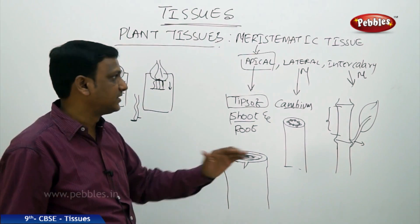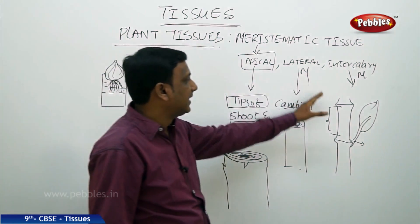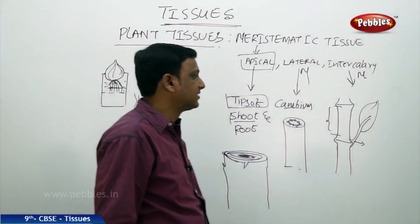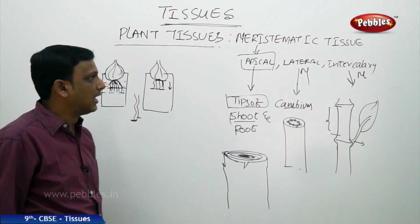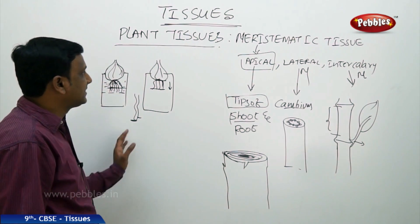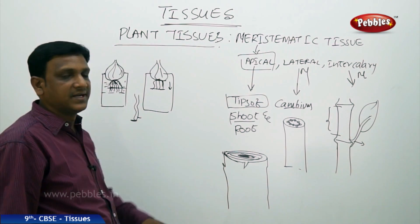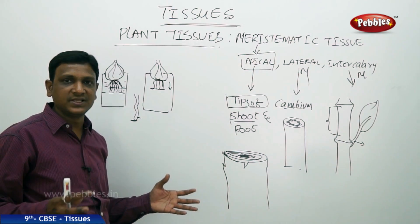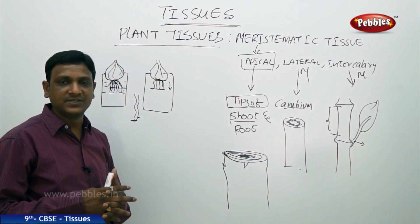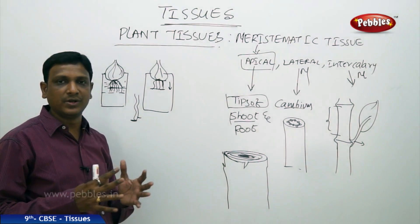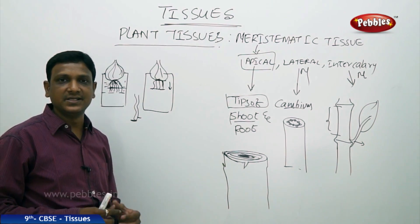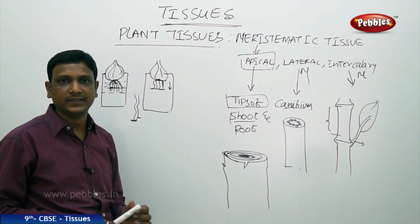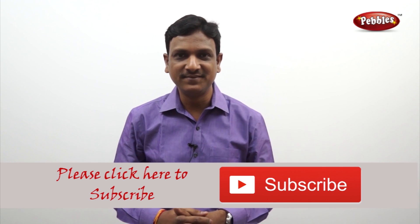Now let us look at the permanent tissues. There are two types: simple permanent tissue and complex permanent tissue.